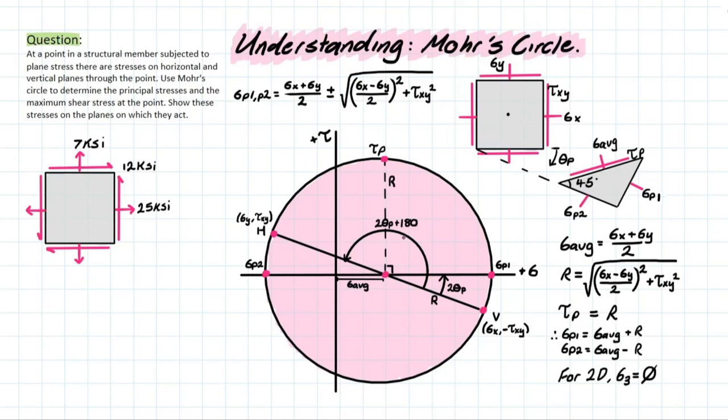Hello everybody, welcome back. Today we have a pretty simple video. We're going to be talking about Mohr's circle and how to understand using this figure to find principal stresses and the max in-plane shear stress. We're going to use it by doing this example. So at a point in a structural member subject to plane stress, there are stresses on horizontal and vertical planes throughout the point. We're given a stress element and it's asking us to use Mohr's circle to determine the principal stresses and the max shear stress at the point, and it wants us to show how these stresses are acting on the planes which they act.